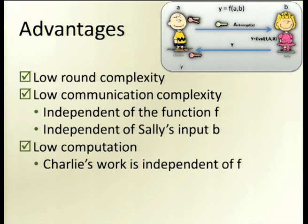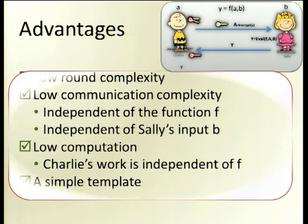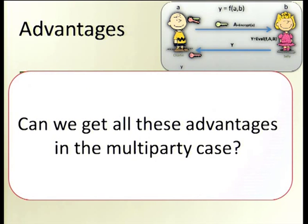Third, it has really low computation — Charlie is lazy, doesn't do anything. He just creates keys, decrypts, and that's it. It's a really simple template. It's really easy to understand why it's secure and what is going on. And our question is: how can we take all these advantages to the multi-party case?